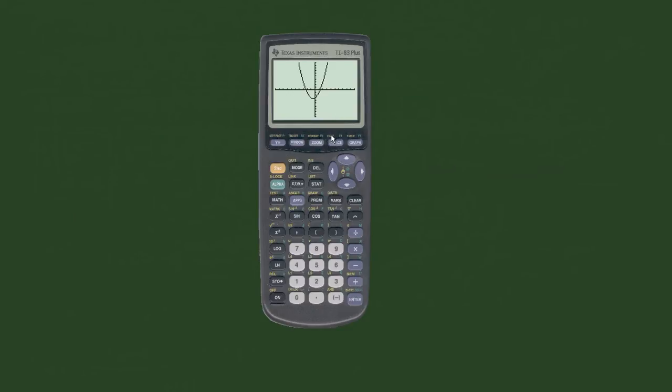Now what we're going to do is we're going to have to go to calculate. So we're going to hit 2nd, trace, which is going to bring up the calculate menu. Here we want to calculate zeros because obviously if you think about the graph of a quadratic equation, its two solutions are at where the graph crosses the, or where the function crosses the x-axis, a.k.a. when y is equal to 0.